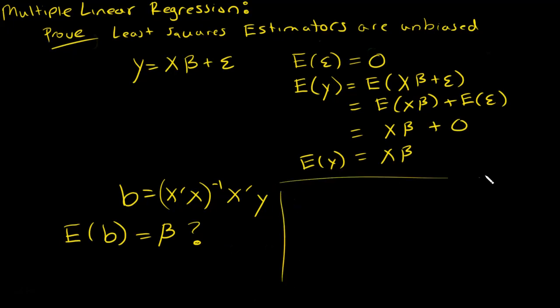Alright, so let's get to it. Let's figure out what the expected value of b is. The expected value of b is going to be the expected value of x transpose x inverse x transpose y. All I've done is I've plugged in b. x is non-random, so all of this stuff comes out to the front, and I'm left with the expected value of y in the back. It's basically like it's constant, I'm pulling it out.